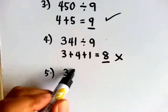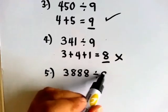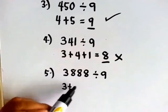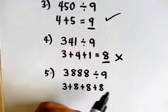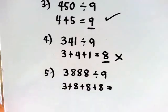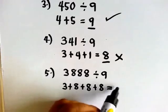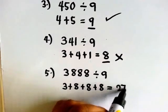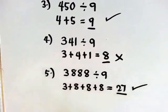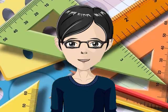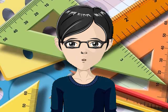Is 3888 divisible by 9? Let's add: 3 plus 8 plus 8 plus 8 equals 27. 27 is in the multiplication table of 9. So the answer is yes. Did you get everything correct? Okay, let's go to the next rule.